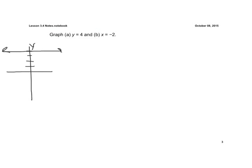Now, for b, x equals negative 2. What this means is it crosses our x axis. Remember, x is a horizontal axis at negative 2. So we have negative 1, negative 2. This is a vertical line. It crosses at negative 2.